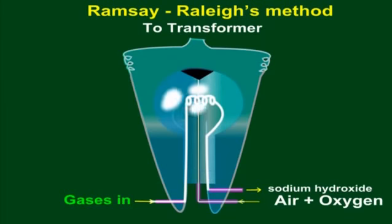The supply of air and electric discharge is shut after some time and the remaining mixture of noble gases is pumped out.